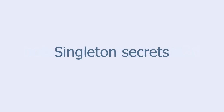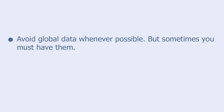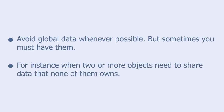This tutorial is called Singleton Secrets. A singleton is an object used for handling global data. You should avoid global data whenever possible, but sometimes you must have them — for instance, when two or more objects need to share data that none of them owns.